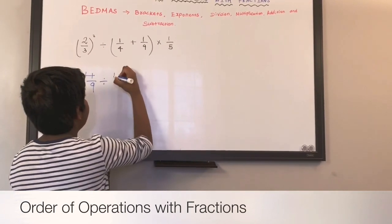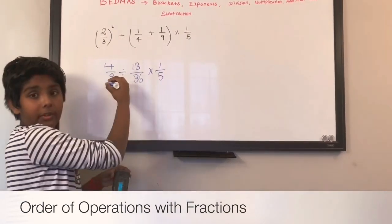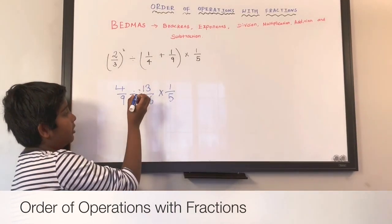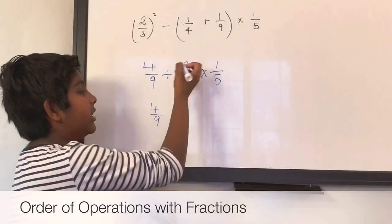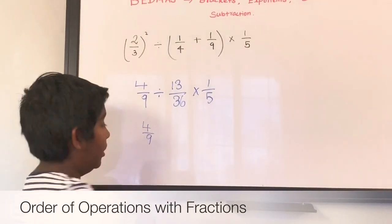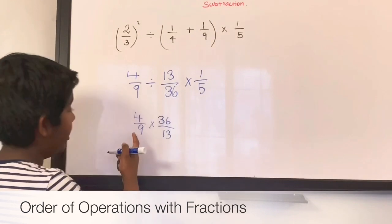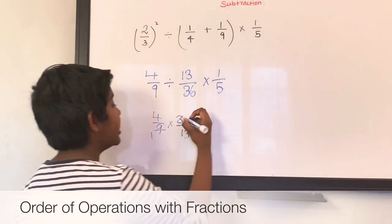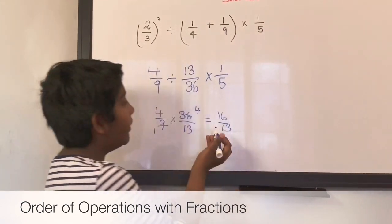So now we have 4 over 9 divided by 13 over 36. We have to find the reciprocal of 13 over 36, which is 36 over 13. We flip it around, and the division symbol changes to a multiplication symbol. Now 9 and 36 are both in the 9 times table: 9 divided by 9 equals 1, and 36 divided by 9 equals 4. So that gives us 16 over 13.